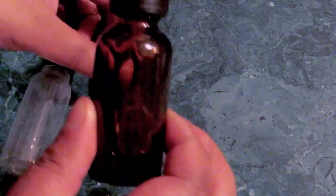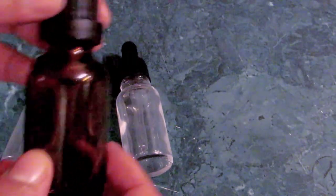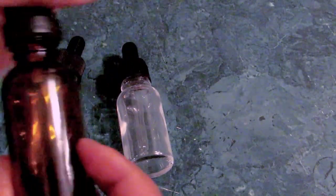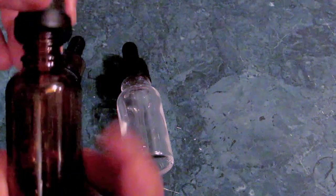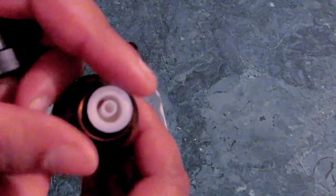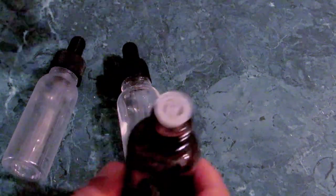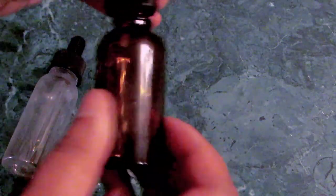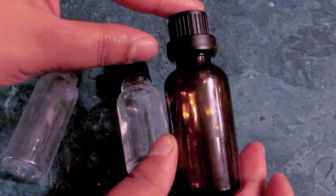This one is usually for essential oils. It's tinted to help prevent light from destroying your oils, and it has one of those typical essential oil dropper caps.